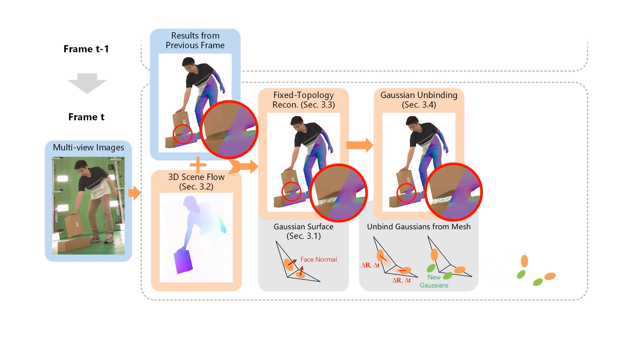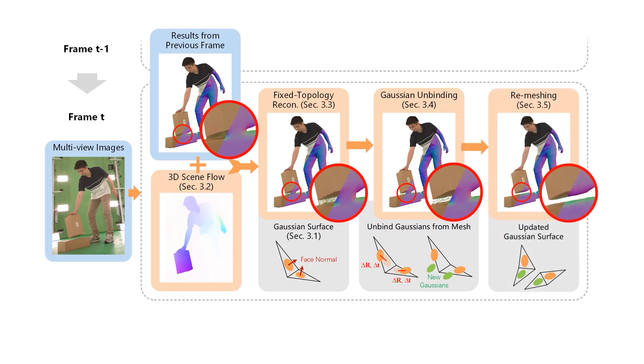Finally, we update the mesh in these regions based on the unbound Gaussians and proceed to the next frame.